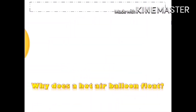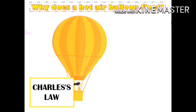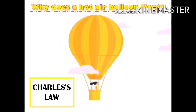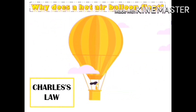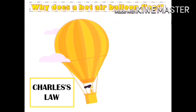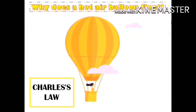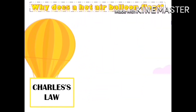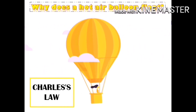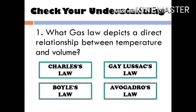So now, did you find the answer to why a hot air balloon floats? This applies the concept of Charles's Law. A hot air balloon uses a burner to heat the air molecules inside the balloon. The molecules move faster and disperse within the space, so the gas takes up more space, becoming less dense than the surrounding air. As a result, the air inside rises and causes the balloon to float.